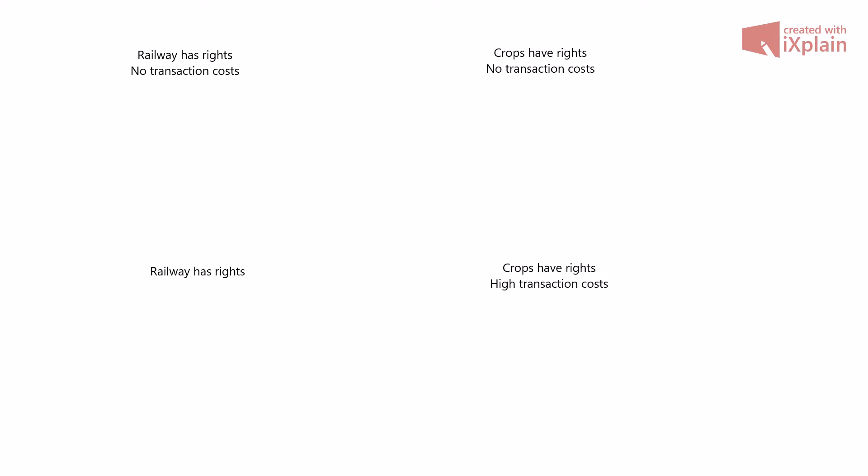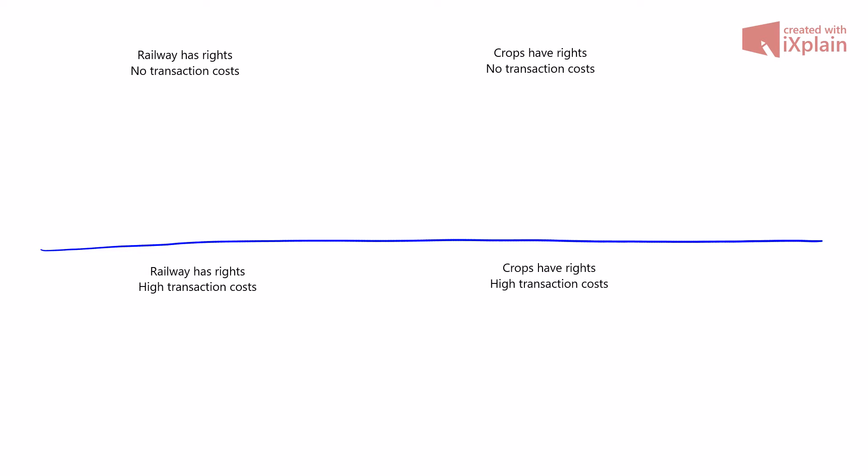We're going to use a concrete example to highlight the main insights from the Coase theorem. We'll have a situation where a railway runs next to farmland with crops, and there are four different settings we're going to look at where we give different property rights and different transaction costs.